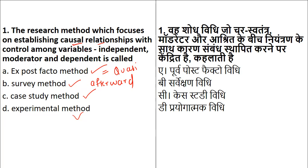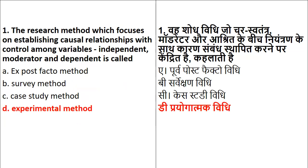Ex-post facto is something where the fact has already taken place and after it has happened, we try to do research on that. Survey method is where you collect data to come to a conclusion. Case study method talks about an in-depth relationship, and experimental method talks about the relationship in research with respect to manipulation and constant variables. So when we talk about a research method focusing on causal relationships with controlled variables, it is definitely the experimental method.